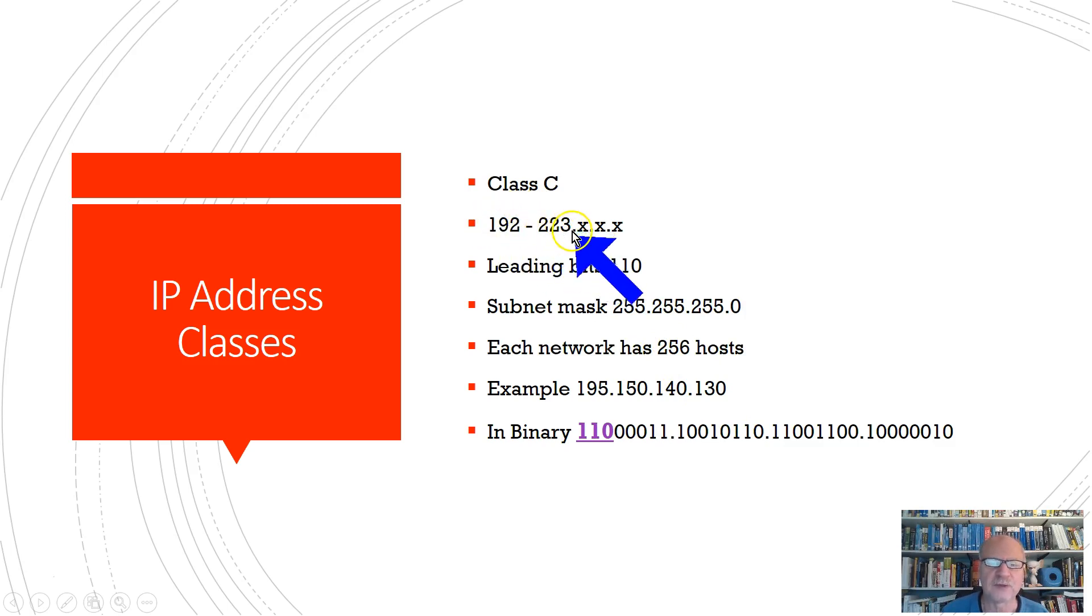Let's look at a class C address. 192 to 223. And a subnet mask of 255.255.255.0. Again, by definition, if it's going to be in this range, it's going to begin with a 110. Any other number would not give me a number within that range. So it has to be a 110 at the beginning of the binary. And notice again here the subnet mask has three 255s in it. So the first three sections of these are network. So here we have a network ID of 195.150.140. And a host ID of 130 in this particular example.